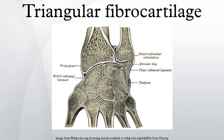Each ligament consists of a superficial component and a deep component. The superficial components insert directly onto the ulnar styloid. The deep components insert more laterally, into the fovea adjacent to the articular surface of the pole of the distal ulna. The ligaments are composed of longitudinally-oriented lamellar collagen to resist tensile loads and have a rich vascular supply to allow healing.